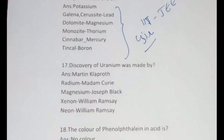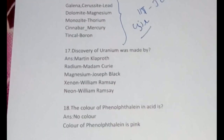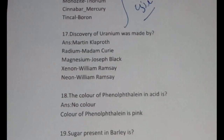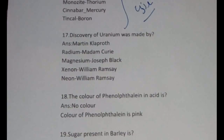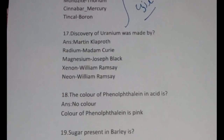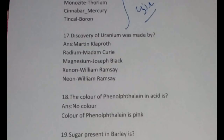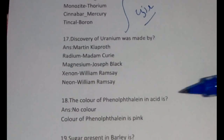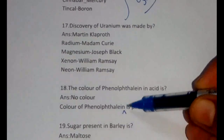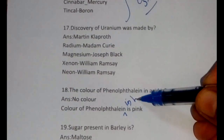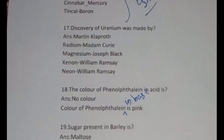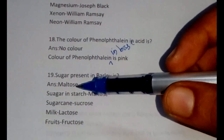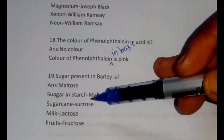The next question is also very important: the color of phenolphthalein in acid and base. The color of phenolphthalein in acid — it has no color. The color of phenolphthalein in base would be pink. In acid it has no color. This is a primitive question but can always be repeated.